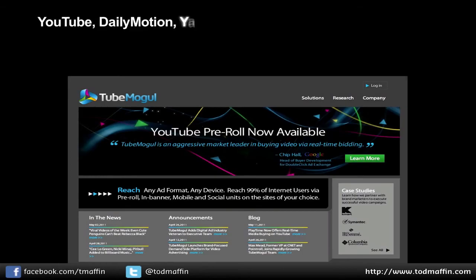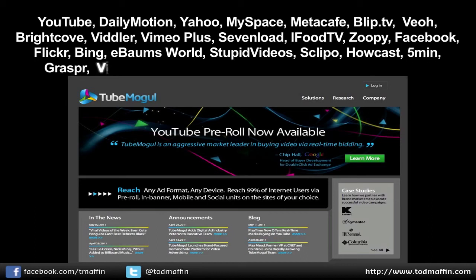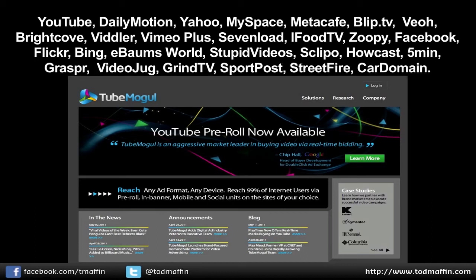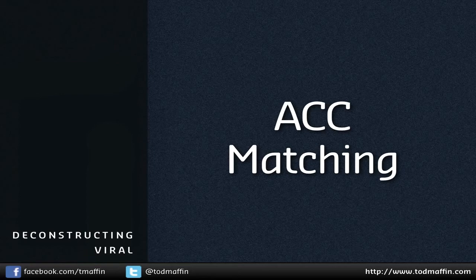And don't just upload it to YouTube. If it's a video, use a seeding service like TubeMogul. You upload the video to TubeMogul once and it distributes it to a couple dozen of the internet's most highly visited video sites. Or a service like Hayspread, which basically does the same thing. So that's ACC matching — match your audience with your content with the call to action. Don't be afraid to seed it to get started, and you will have mastered the first of six keys to producing a killer viral marketing campaign.